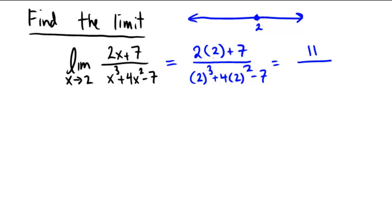In the bottom, let's do some extra simplification. 2 cubed is 8, 2 squared is 4 times 4 is 16, minus 7. 8 plus 16 is 24, and 24 minus 7 is 17. So in the denominator, it looks like we're getting a 17. The answer to this one is just 11 over 17.